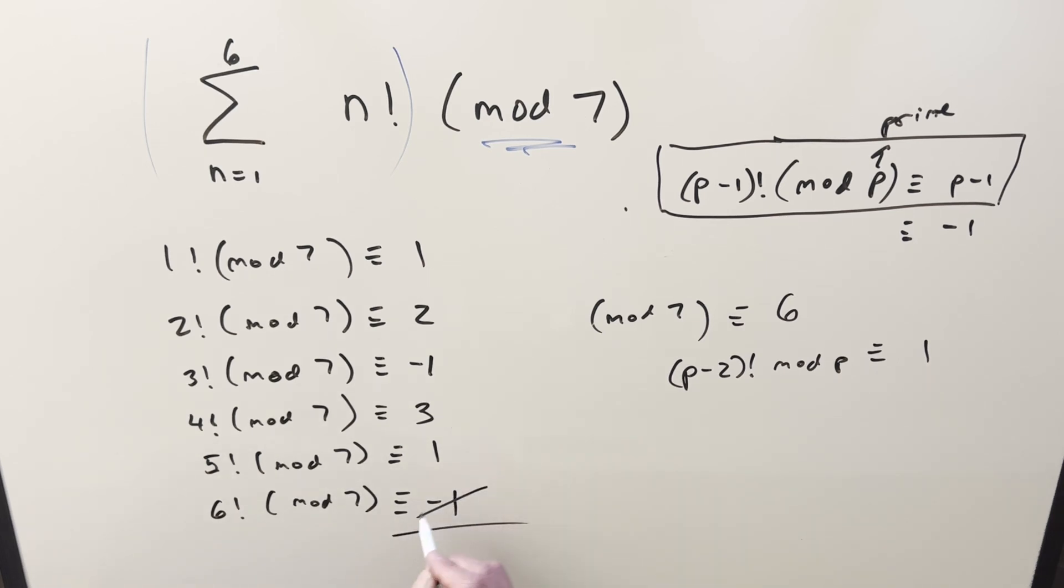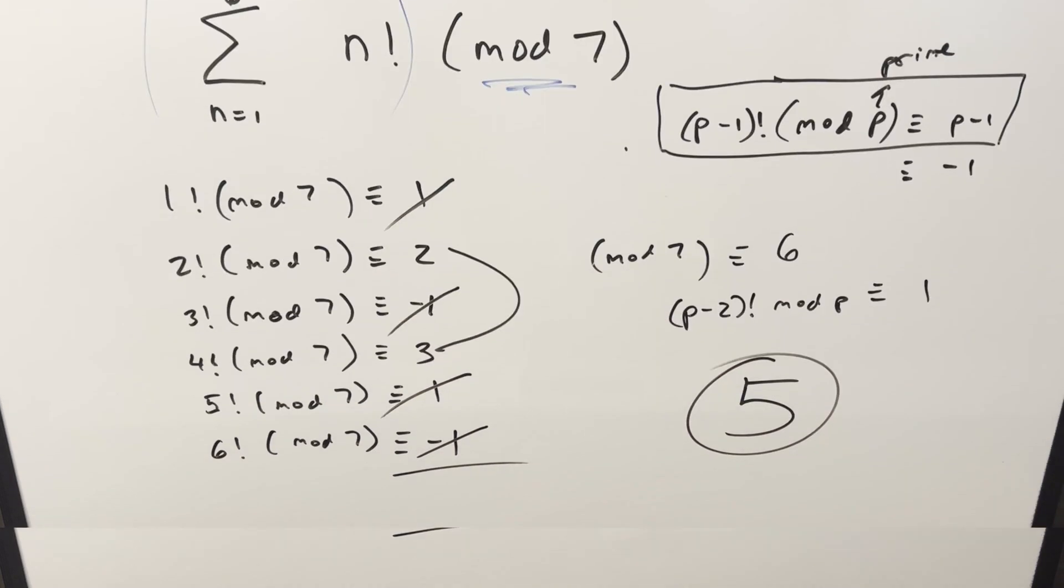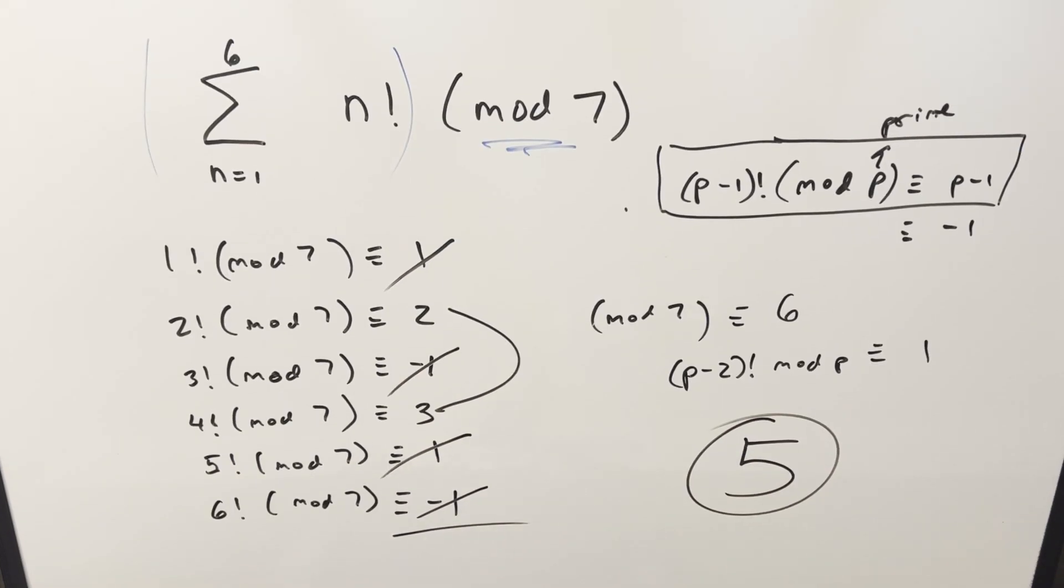So then when I sum these up we can cancel that and get a 0, cancel that and get a 0, add together 2 and 3 and for my final solution on this we just get 5 and that's it. Okay there you go that's it for today thanks so much for watching have a good day.